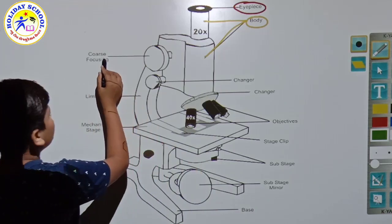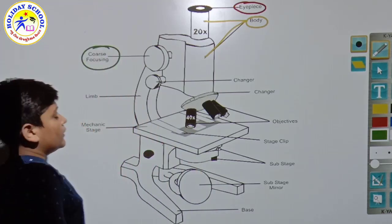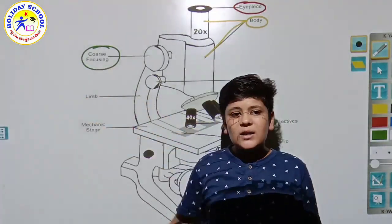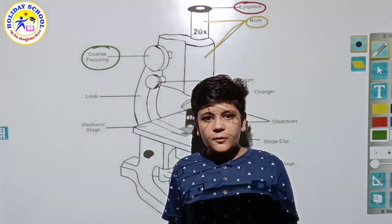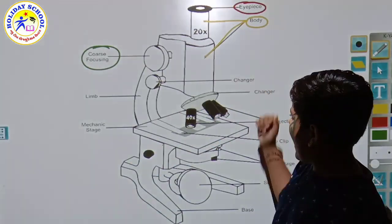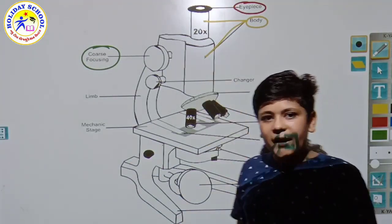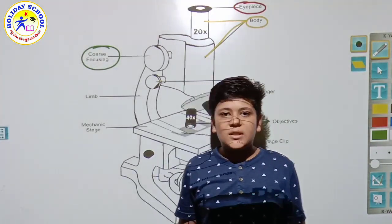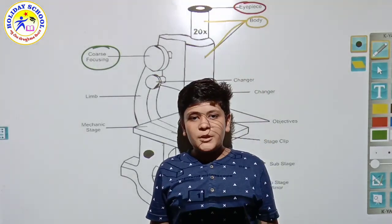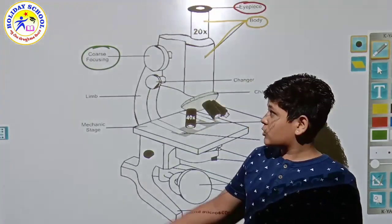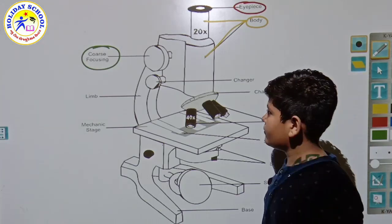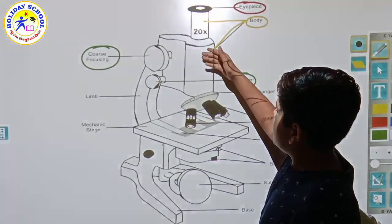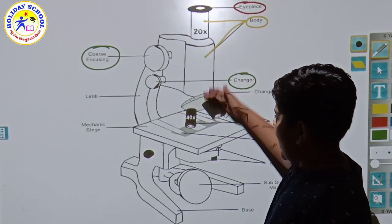Now let's see the coarse focusing. Coarse focusing means it focuses the quality - how much to zoom in or zoom out. You know that in mobile phones we have zoom. While clicking pictures, the clarity is not coming, so the clarity comes from this. This changes to move the body down and up.